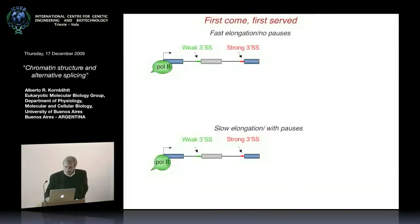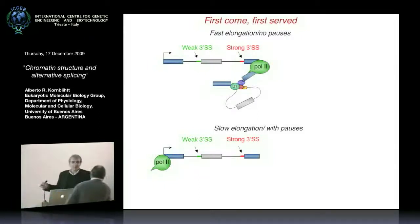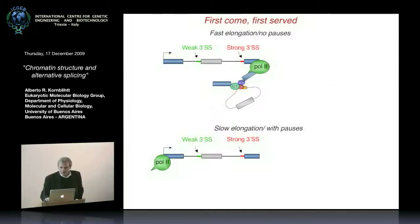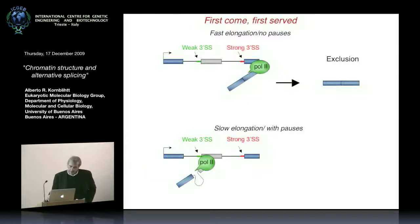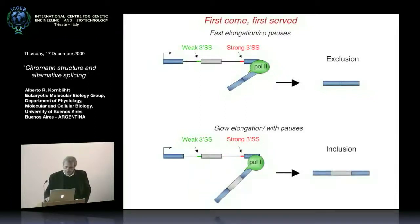The Pol2 elongation mechanism was based on the 'first come, first served' model. If Pol2 runs fast with no pauses, when there are two competing splicing sites — one weak and one strong — the stronger site wins, the spliceosome leaves out the alternative exon, leading to exclusion. But if Pol2 is slower, the weak site can be synthesized first, giving time for spliceosome recruitment. The first intron can be excised first, then the second intron second, leading to inclusion.